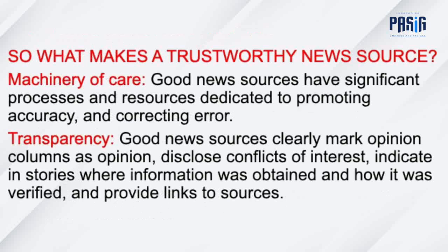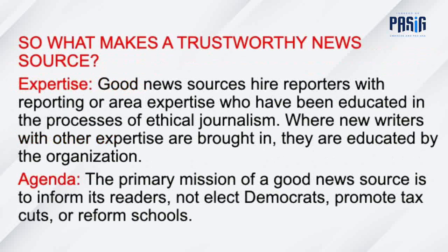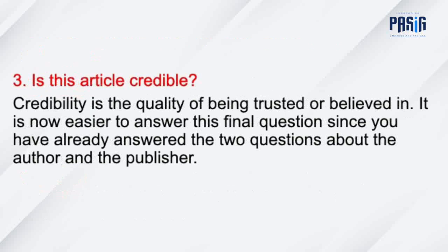Machinery of care: good news sources have significant processes and resources dedicated to promoting accuracy and correcting error. Transparency: good news sources clearly mark opinion columns as opinion, disclose conflicts of interest, indicate how information was obtained and verified, and provide links to sources. Expertise: good news sources hire reporters with reporting or area expertise who have been educated in ethical journalism. Agenda: the primary mission of a good news source is to inform its readers. Number three: is this article credible?